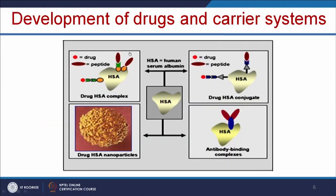The next category is development of drugs and carrier systems. We can make biocompatible and biodegradable nanocarriers which can deliver the drug to the targeted location. For example, we can use human serum albumin (HSA), which is one of the highly biodegradable materials. We can load it with any kind of drug and also target this HSA to a particular location. If we want to target the nanoparticle to cancer, we can add cancer-specific antibodies so it can bind only to the cancer cell and release the anti-cancer drug there.